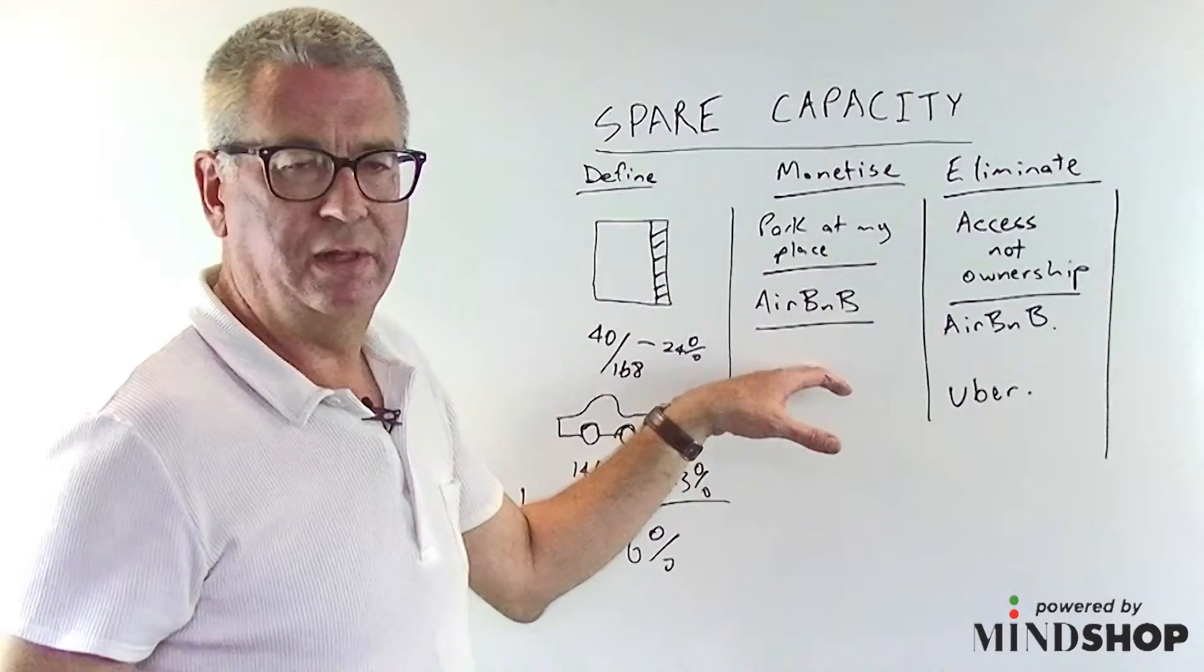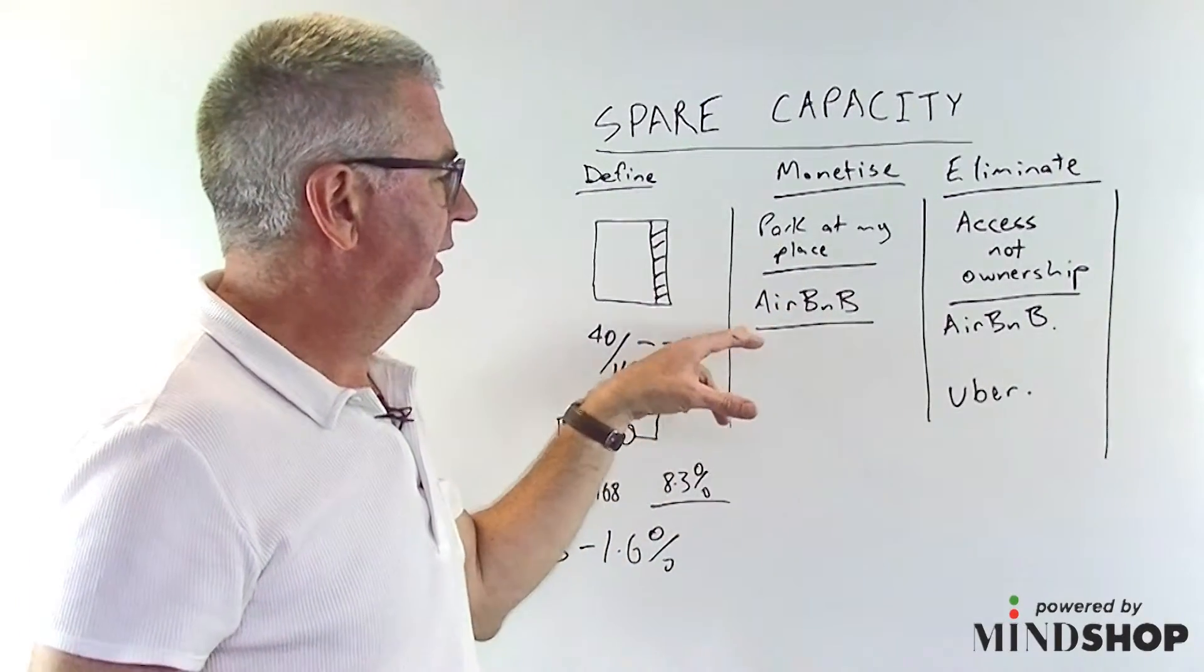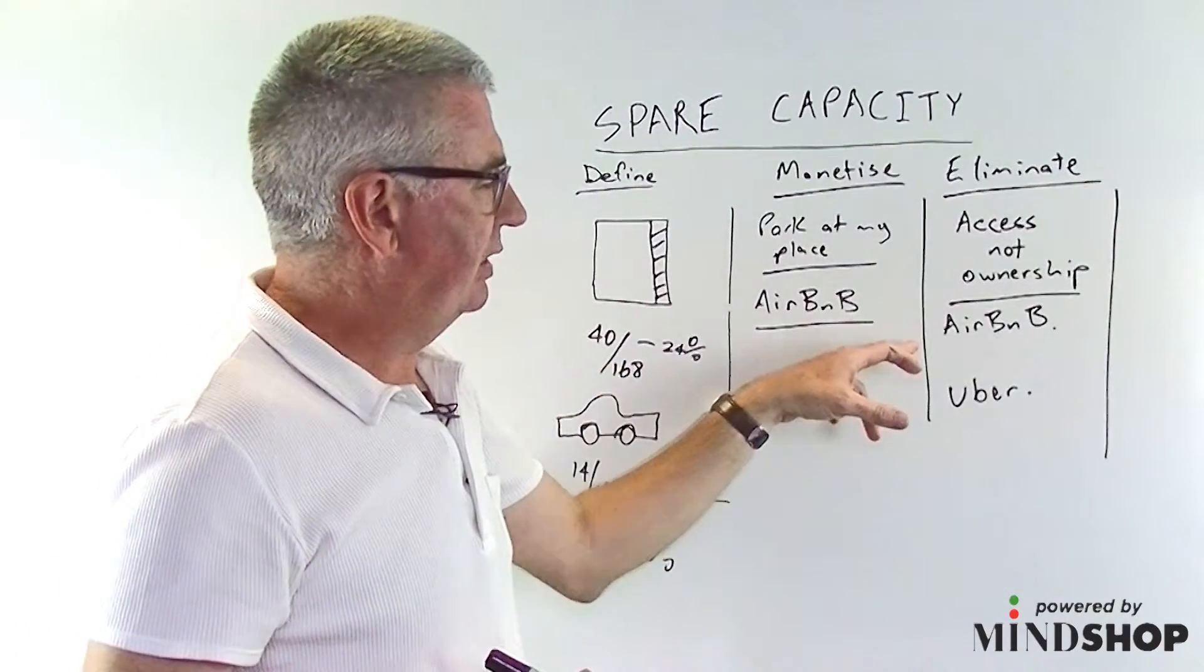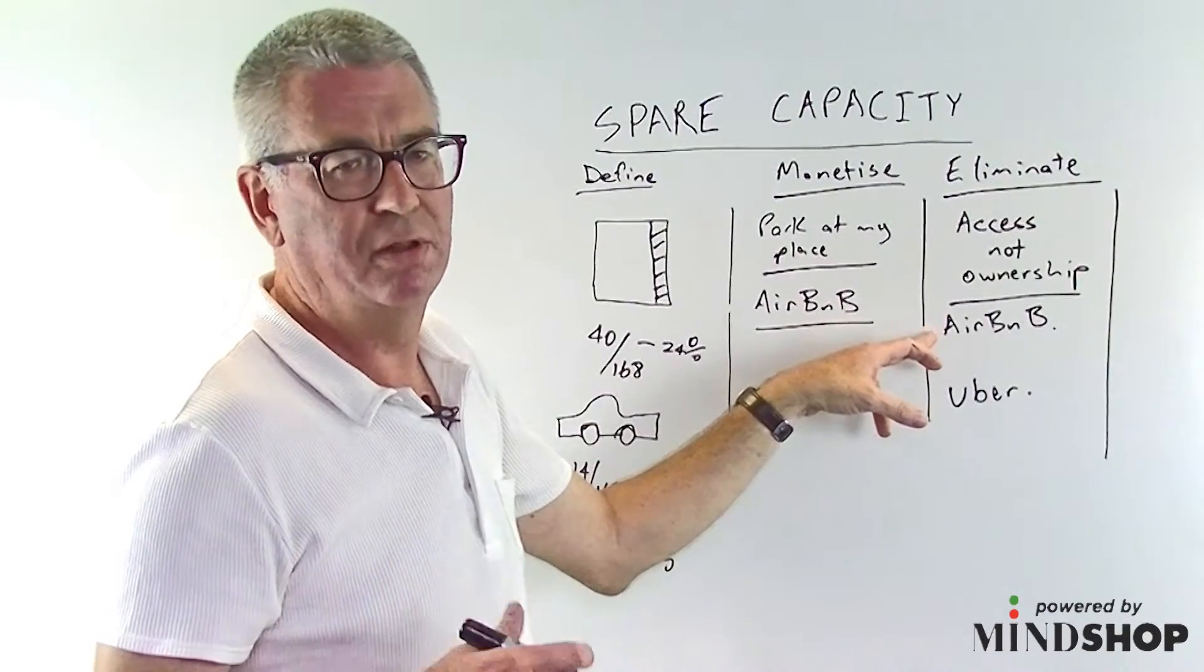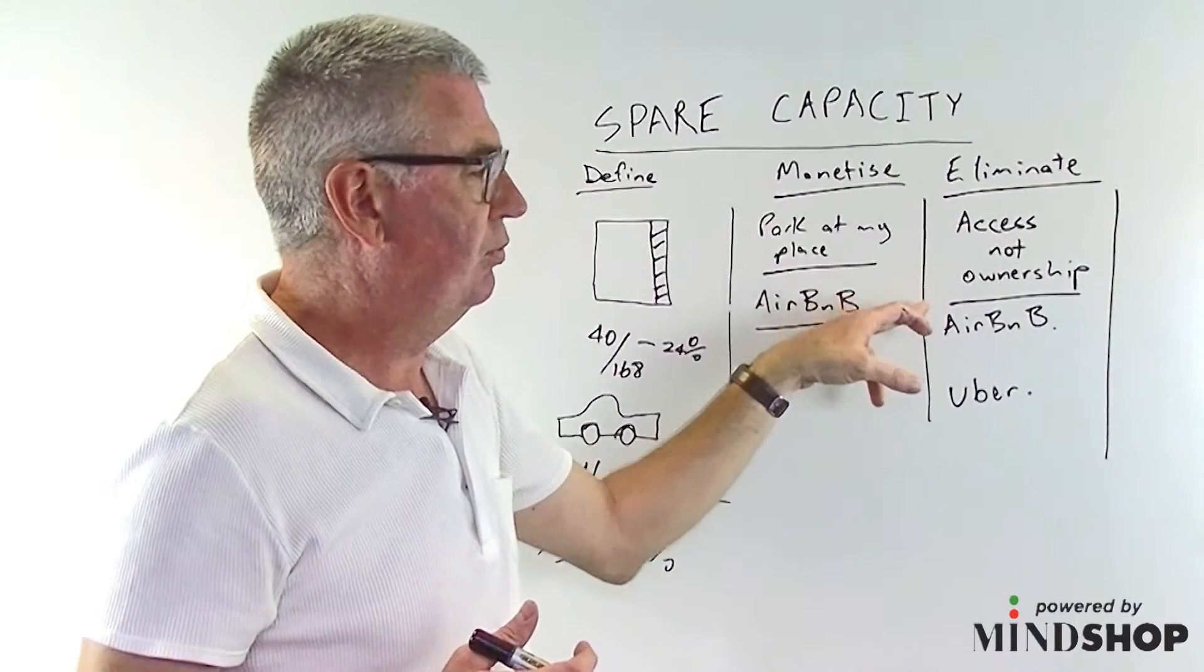So this is really clever. Airbnb is dealing with two sides of this. It's enabling people who've got spare capacity to sell it. And it's enabling people like me who don't want to own an apartment in Istanbul or own a beach house to access it when I need it, without owning it.